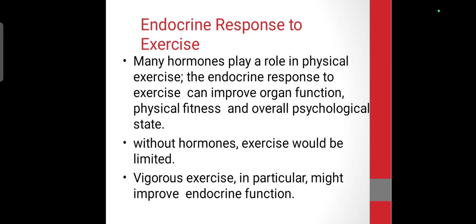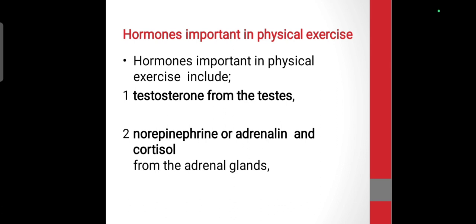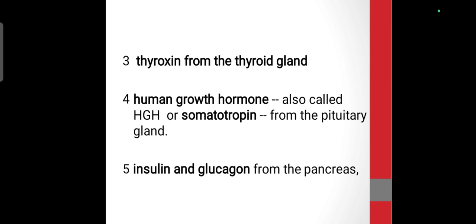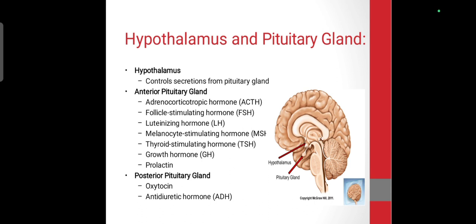Key hormones important in physical exercise include: epinephrine, norepinephrine, thyroxine, growth hormone, insulin, and glucagon. Without hormones, achieving results through exercise becomes more difficult. We will discuss each of these one by one. The hypothalamus and pituitary gland — the hypothalamus is basically the control center which controls the secretion of the pituitary gland.